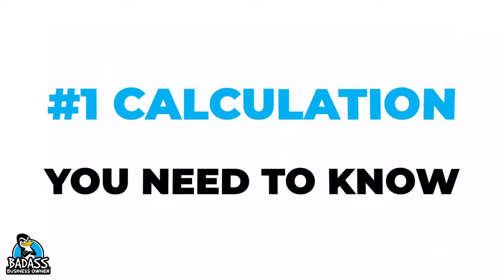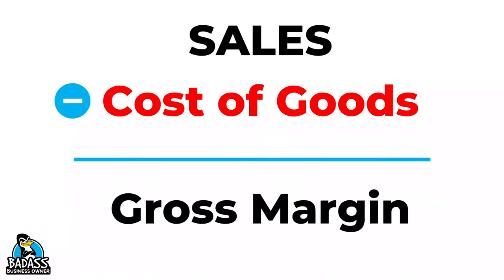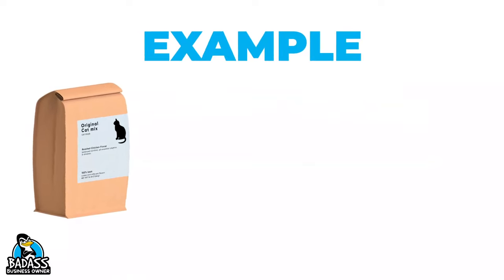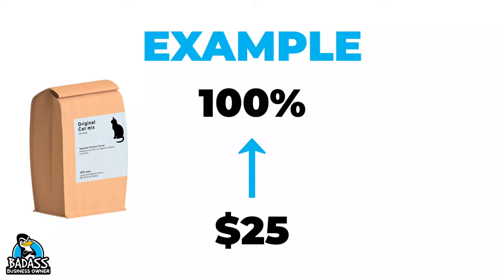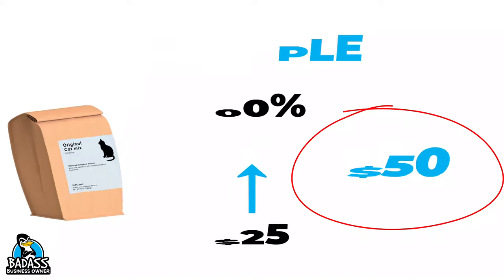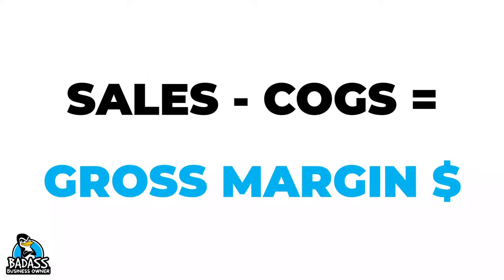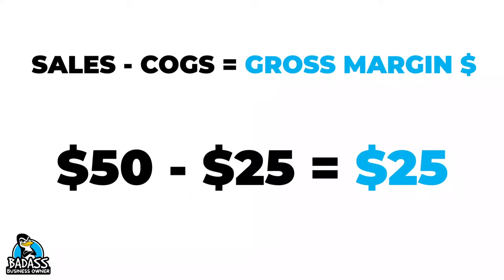Gross margin is the percentage of your sales that the business makes after cost of goods, and a 100% markup doesn't equal 100% margin. The number one calculation to learn is: sales minus cost of goods minus expenses equals profit. Gross margin is what you have after you subtract your cost of goods from your sales. For example, if a product costs you $25 and you mark it up 100%, you add $25 to get a price of $50. Your gross margin dollars are $50 minus $25, which equals $25.